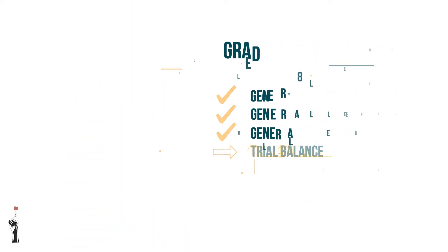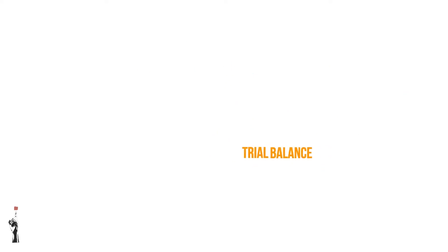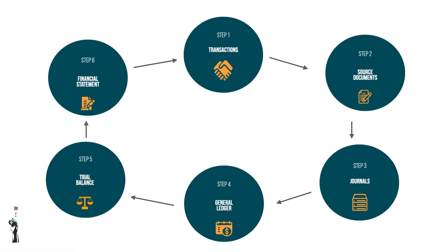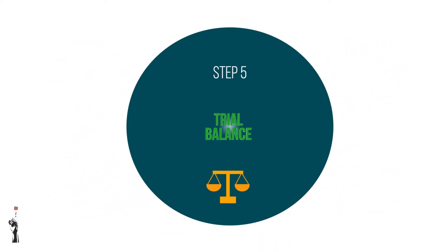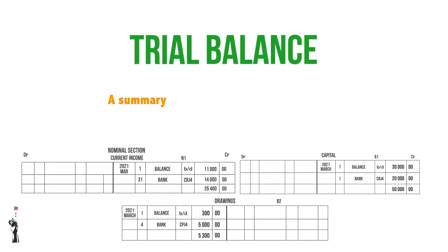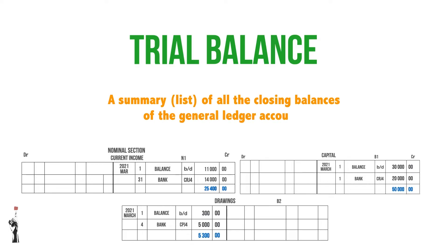In this lesson we will be looking at the trial balance, which is the next step in the accounting cycle after the general ledger. A trial balance is a summary — or you could say a list — of all the closing balances of the general ledger accounts.